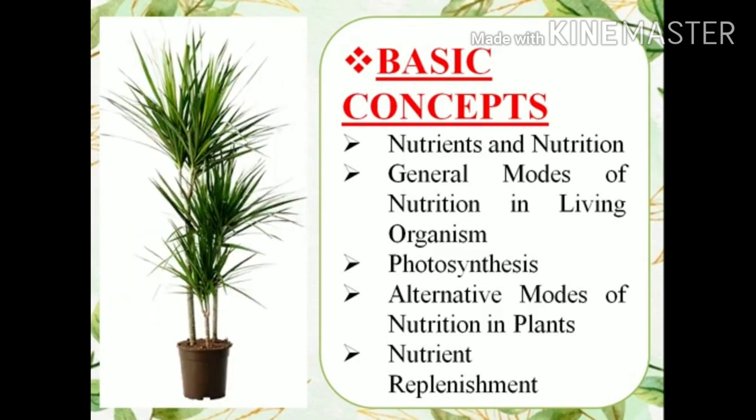Let's see how it occurs. Here in the picture it is clearly shown that green plants, in the presence of sunlight, take up carbon dioxide from the atmosphere and water from the soil, and form carbohydrates, also releasing oxygen as the byproduct.